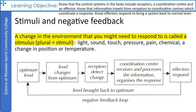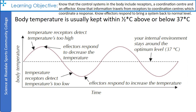This process happens without you thinking about it — it's all automatic. An example is body temperature, which is usually kept within half a degree Celsius above or below 37 degrees. If the temperature receptors detect the temperature is too high, effectors respond to decrease the temperature — this usually is in the form of sweating. If temperature receptors detect that the temperature gets too low, effectors respond to increase the temperature — this can be shivering or pulling the hairs up on your arms so they trap a layer of air. Your internal environment overall will stay around about the optimum level.